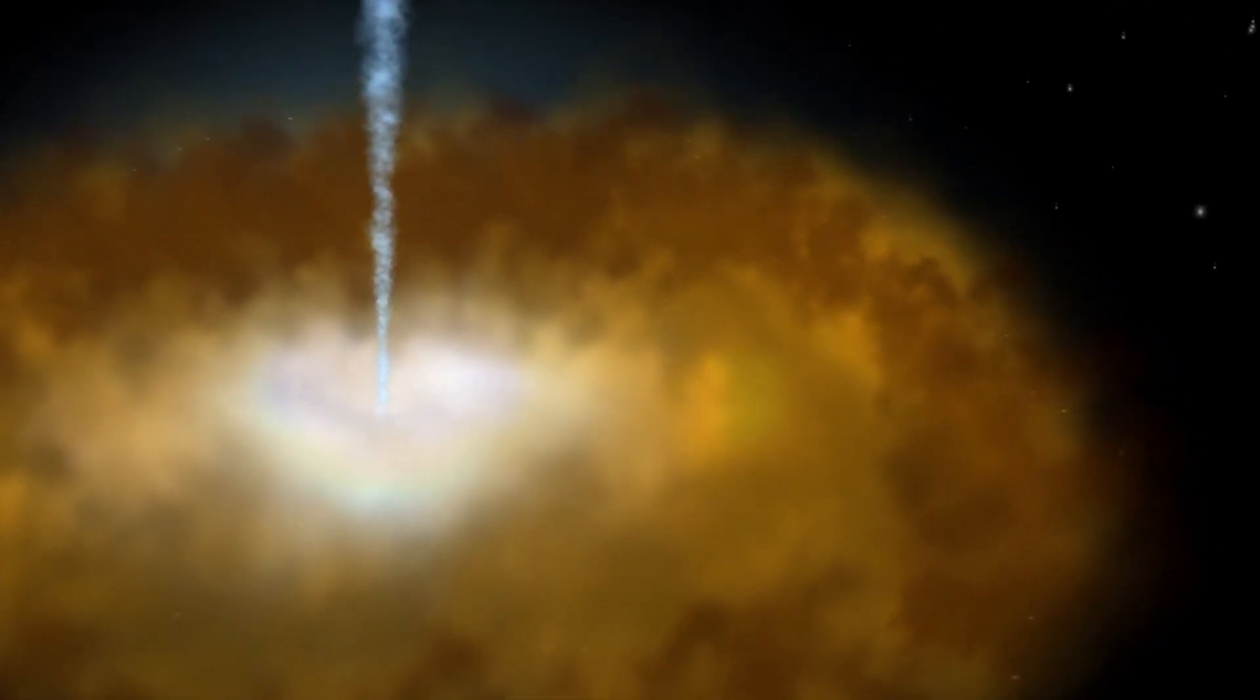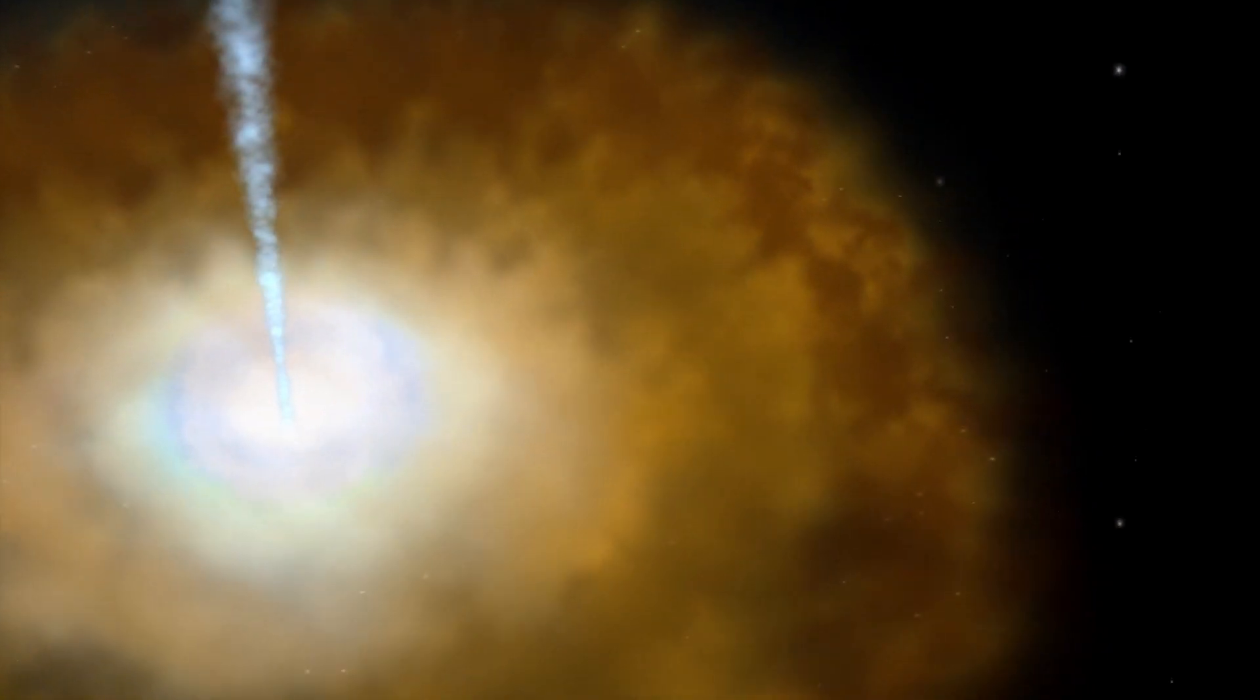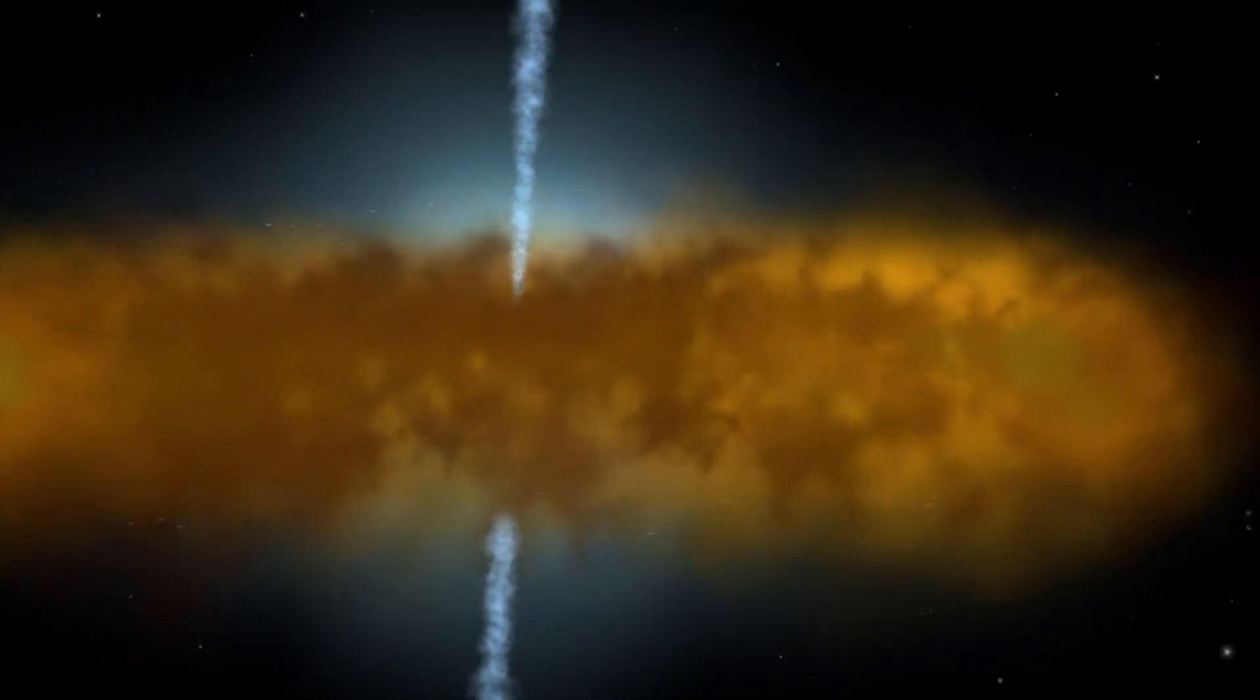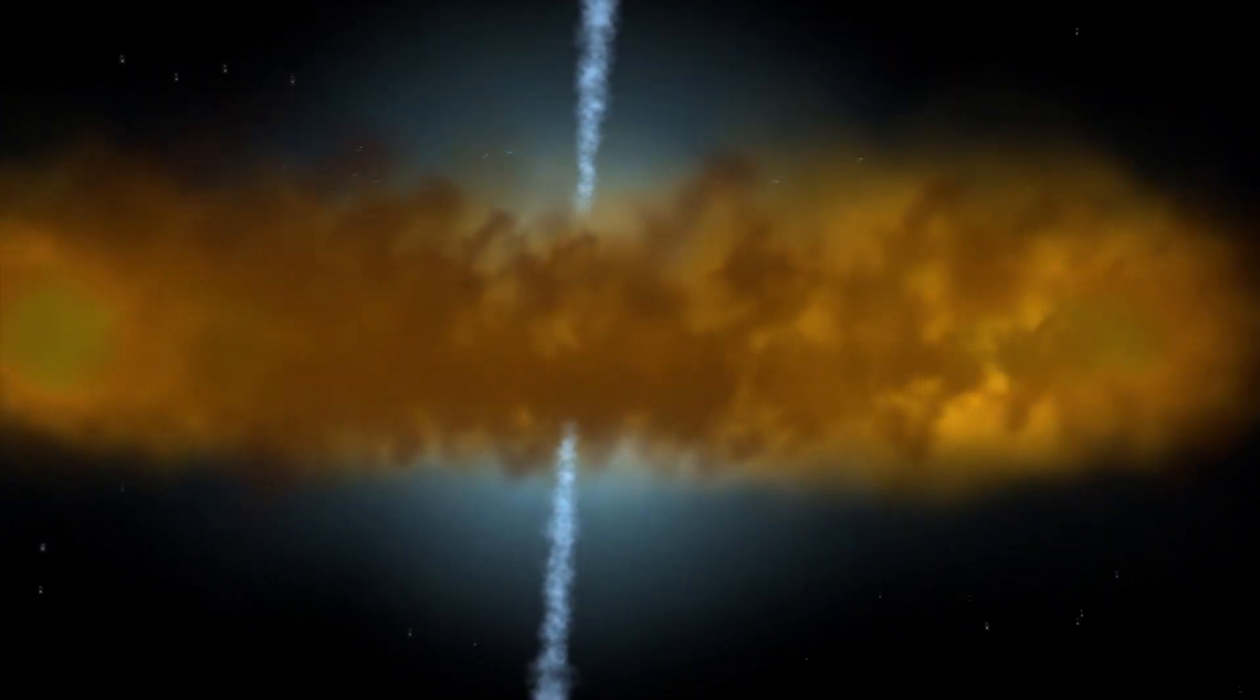The brightest active black holes, which include quasars and blazars, are those we see face-on. But as the viewing angle increases, the surrounding disk absorbs increasing amounts of radiation.